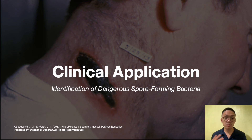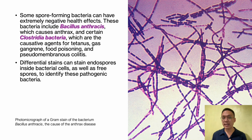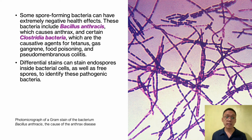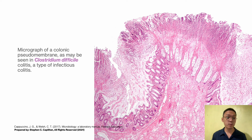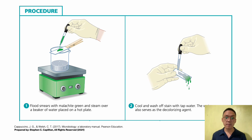In clinical application for identification of dangerous spore-forming bacteria: spore-forming bacteria can have extremely negative health effects. These include Bacillus anthracis that causes anthrax, and certain Clostridia which are causative agents for tetanus, gas gangrene, food poisoning, and pseudomembranous colitis. Differential stains can stain spores inside bacterial cells as well as free spores to identify these pathogenic bacteria.